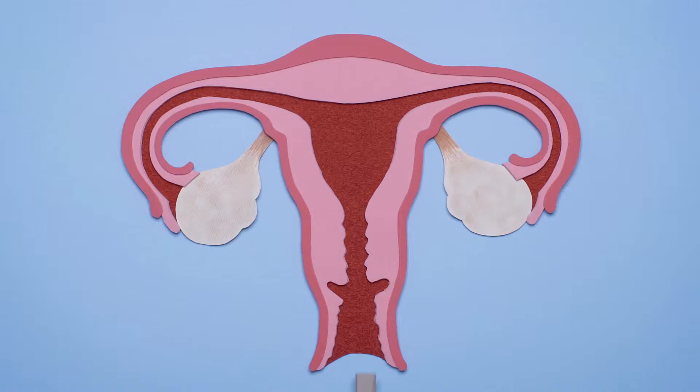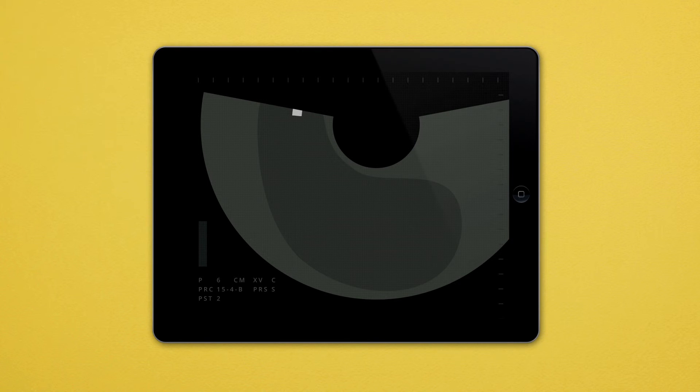Embryo transfer is a simple procedure which does not require anesthetic. A catheter is inserted through the cervical canal and the embryos placed in the uterus. The process is monitored by ecography to ensure that the embryos are put in the right place.